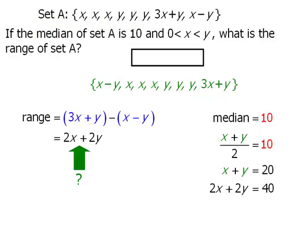At this point, we've answered our question. Since our goal was to find the value of 2x plus 2y, and we now know that this is equal to 40, we can now go up here and enter 40.